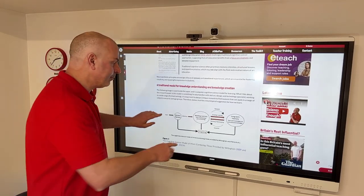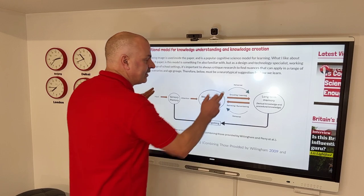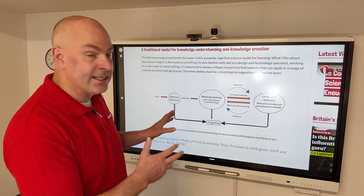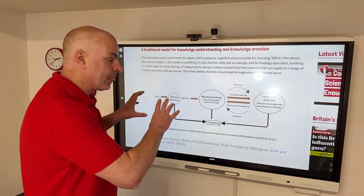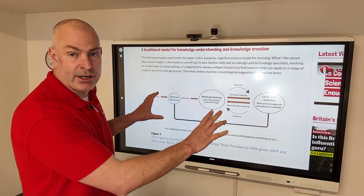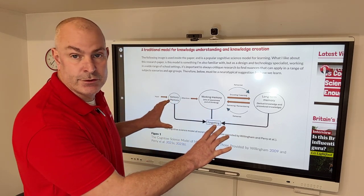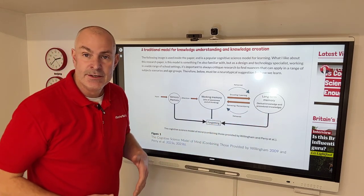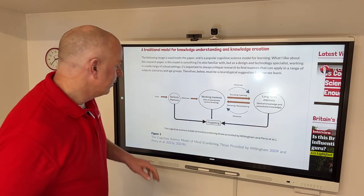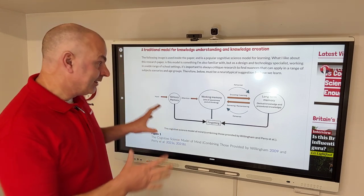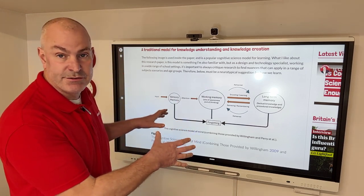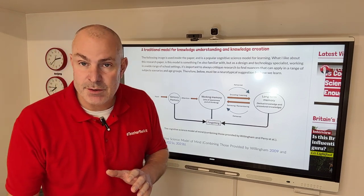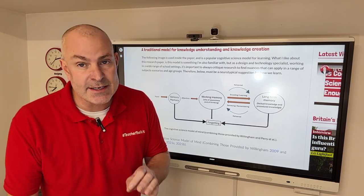If you're not familiar with how learning happens, many of you will have seen this diagram in my physical teacher training sessions. This is typically a popularized model for how we develop knowledge acquisition into our long-term memory. So this new research paper is questioning this traditional cognitive science model, and there's a phrase I've not heard before: neuroaesthetics.